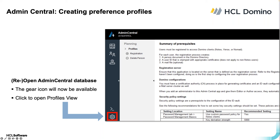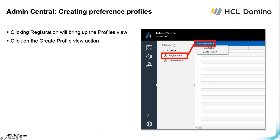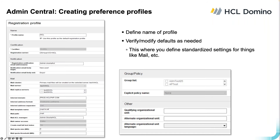After you reopen the Admin Central database, there will be a gear icon now visible. Right above it is a server console icon. If you click on the gear, you'll be taken to what's called the Planning page, which brings up some of the prerequisites we've already discussed and also provides information within the database itself. Clicking on the Profiles tab will bring up a view where you can create a profile — choosing either Registration or Delete Person. We're going to click on Registration.